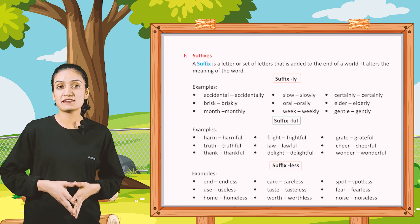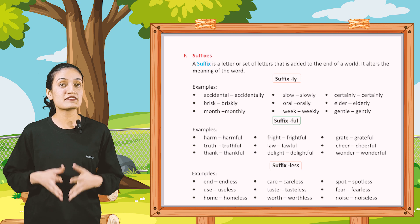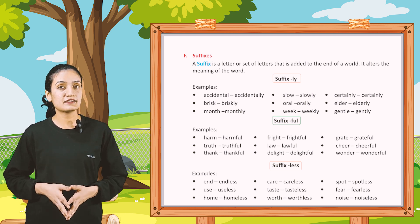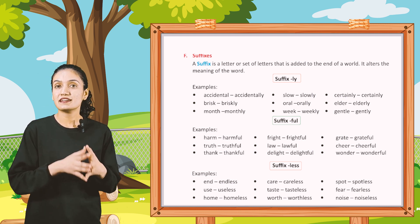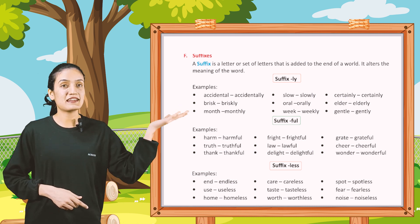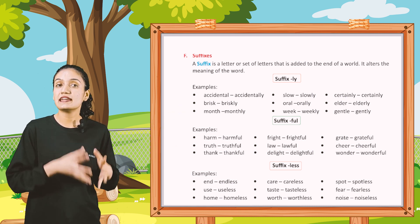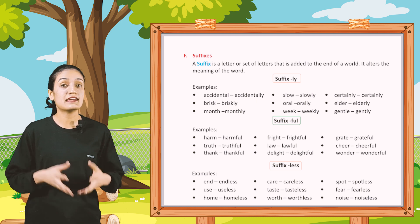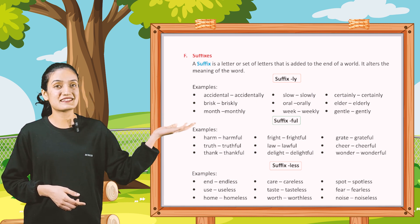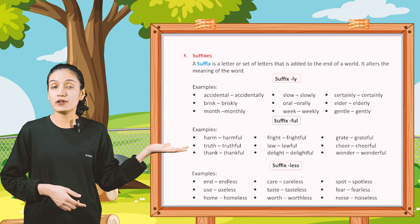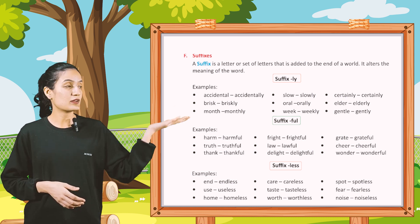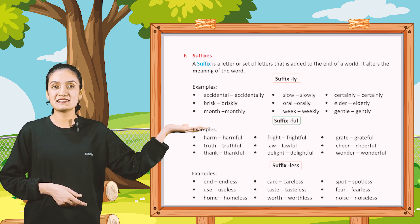Now F, Suffixes. A suffix is a letter or a set of letters that is added to the end of a word. It alters the meaning of the word. Suffix -LY. Examples are: Accidental — Accidentally. Slow — Slowly. Certainly — Certainly. Brisk — Briskly. Order — Orderly. Elder — Elderly.